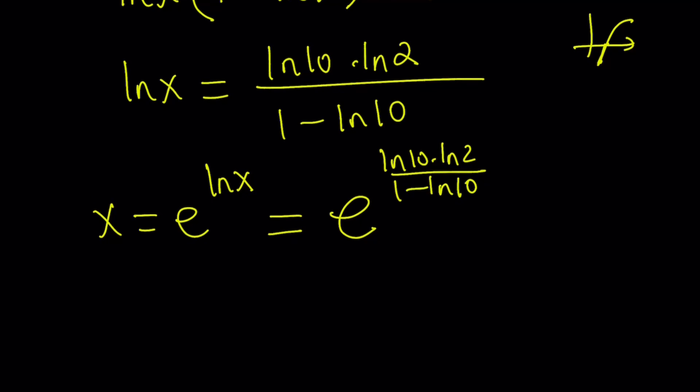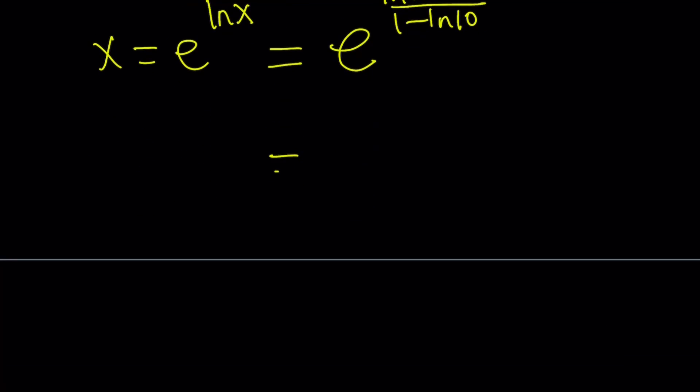You can leave it as is, but also do a little bit of manipulation here. So, for example, this can be written as e to the power ln 2 to the power ln 10 over 1 minus ln 10. So, kind of like keeping the 10s together and putting the ln 2 or tucking it inside. But e to the power ln 2 is just 2.